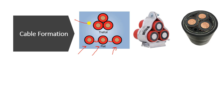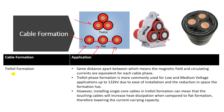The key difference between these two configurations: in the trefoil formation, the distances between all three phases are equal. The distance here is the same as the distance here, and the same as the distance here. This equal spacing means all phases experience the same magnetic field and the same circulating currents.